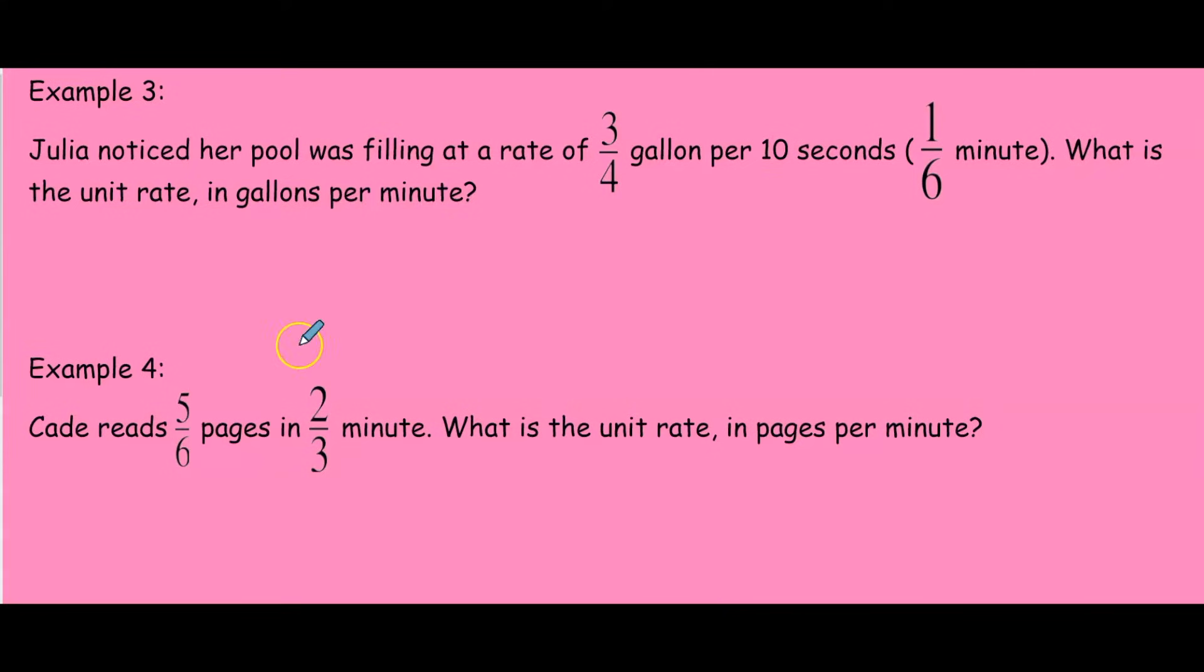To figure out the order in which your fractions need to go, we look at gallons per minute. So our gallons needs to come first. That's going to be three-fourths on top of minutes, which was one-sixth.